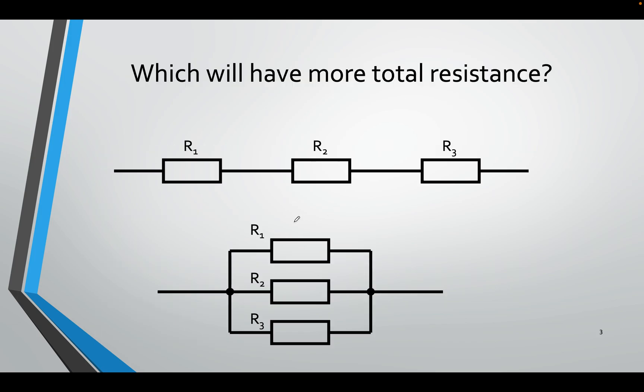If you look at these two, you will realize that in this case, the current has to pass through three resistors. It's going through all three, so it's a high resistance.